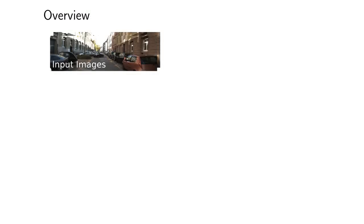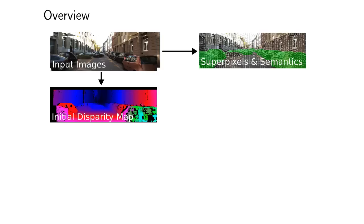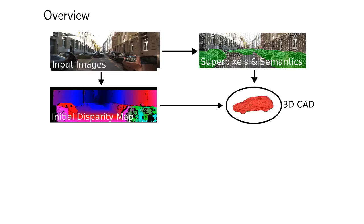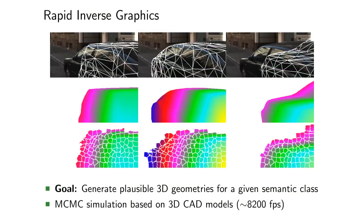Given two input images, we first compute an initial semi-dense disparity map and semantic class labels using existing methods. Based on these two modalities and a set of 3D CAD models, we run an inverse graphics engine to yield a set of plausible object proposals. We will call these corresponding partial disparity maps Displets in the following.